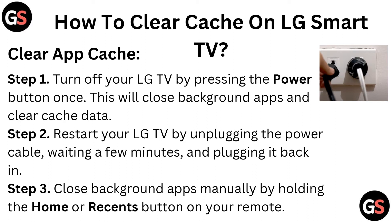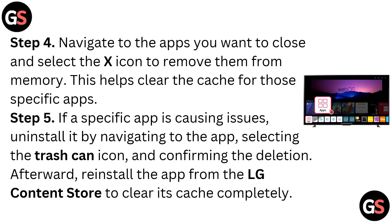Step 3: Close background apps manually by holding the home or recent button on your remote. Step 4: Navigate to the apps you want to close and select the X icon to remove them from memory. This helps clear the cache for those specific apps.